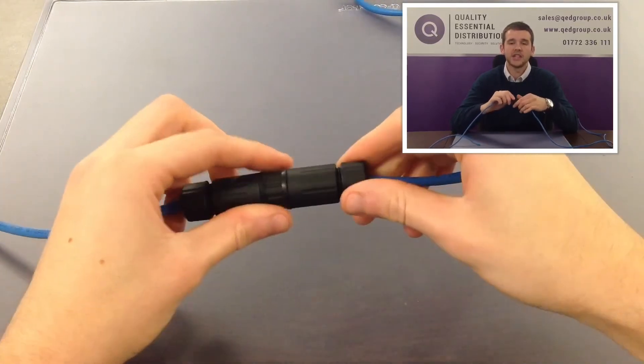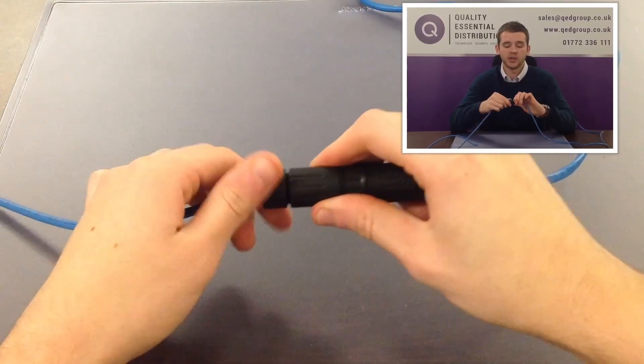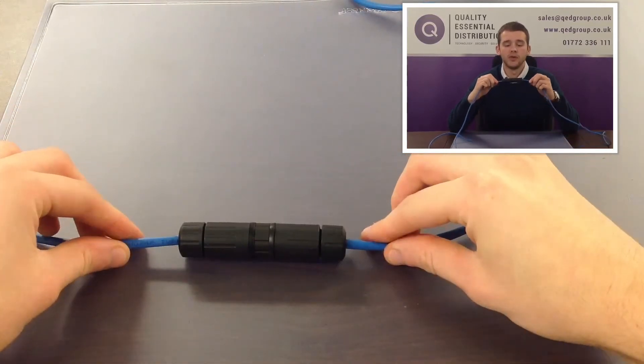And on each side of the coupler have a rubber sealed compression gland. Simply twist till tight at both ends and it gives you a fully waterproof connection.